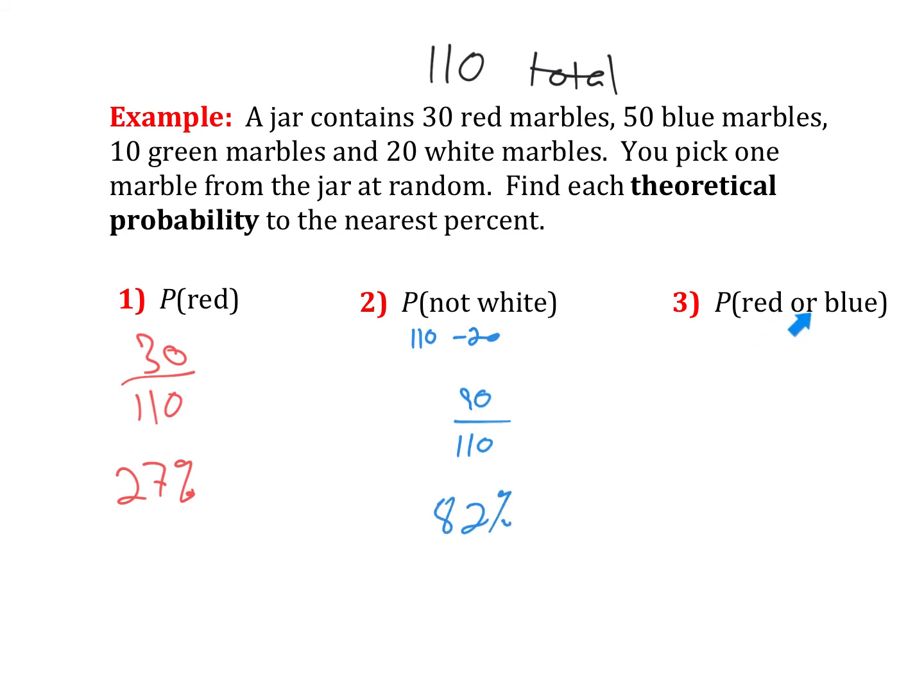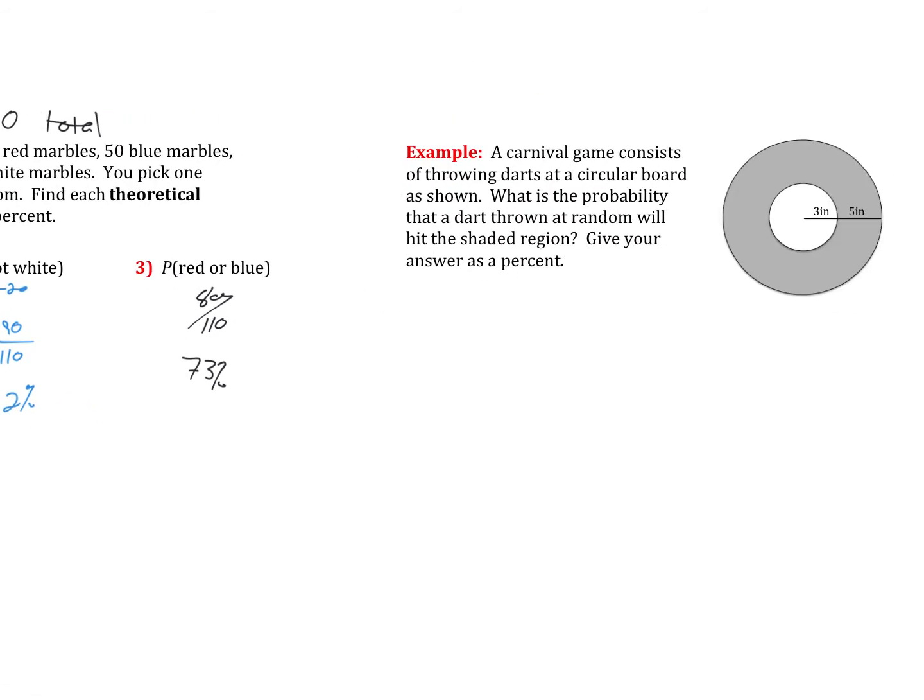And last, we have either red or blue. So between those two, I've got 30 reds, and I've got 50 blues. So between those two color combos, I've got 80 total. So 80 out of my total 110. As a decimal, that would be about 73%.